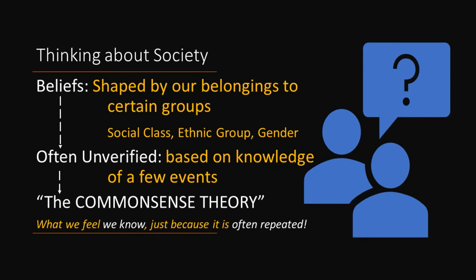Where do these beliefs come from? Our beliefs are often shaped by our belonging to certain groups. We all belong to different groups — different social classes, different ethnic groups, different genders. If we are upper or lower social class, we won't think in the same way. If we belong to a particular ethnic group, we will think in terms of that group. Whether you are a man or a woman also influences the way we think. And all these beliefs are very often unverified, because they are based on the knowledge of only a few events and are not necessarily verified scientifically.